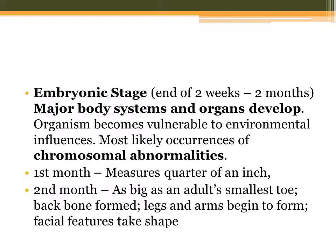During the first month, the embryo measures a quarter of an inch. By the second month, it is as big as an adult's smallest toe. At this point, the backbone has formed, legs and arms begin to form, and facial features start to take shape.